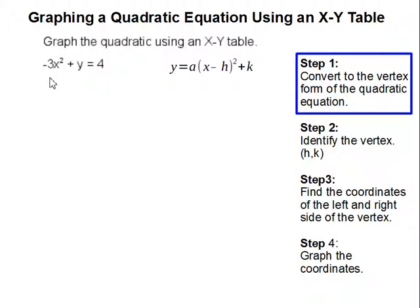Our first step is to manipulate our equation to the vertex form of the quadratic equation in order to find the vertex, which is the center of our graph. We start off by adding 3x squared on both sides to get y by itself. So now we have y equals 3x squared plus 4.